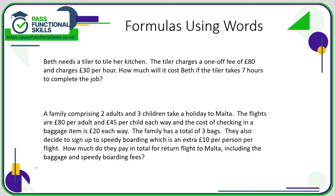So Beth needs a tiler to tile her kitchen. The tiler charges a one-off fee of £80 — so that means however long the tiler is doing the job, whether it's one second or two weeks, he's going to charge that £80 regardless — and he also charges £30 per hour. So Beth is being charged the £80 and she's also going to be charged £30 times 7, which is £210. So £210 plus the £80, she's going to be paying £290.